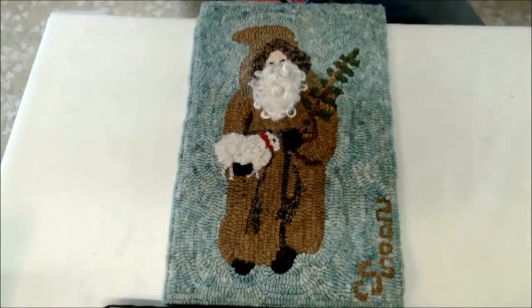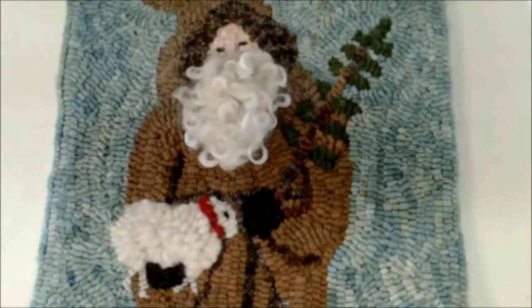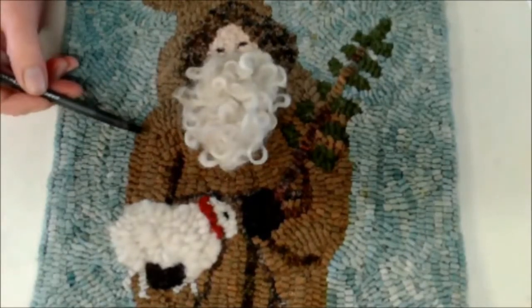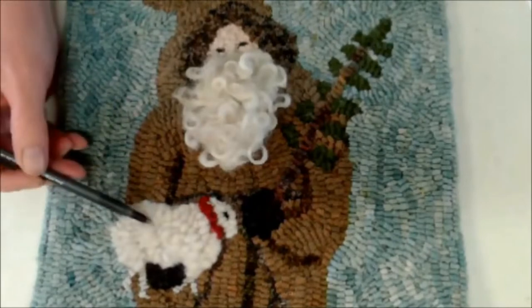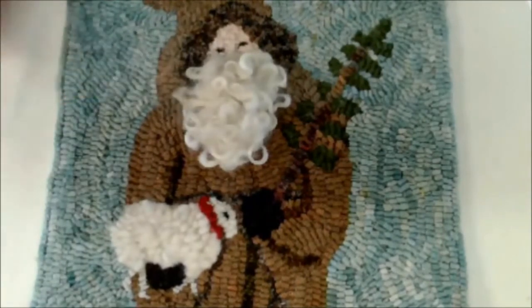First, let's take a look at rug hooking. Hooking is a method used to make rugs and other textiles by using a hook to pull narrow loops of cloth or yarn up through a foundation fabric. Here we have a Father Christmas who has been hooked using wool strips, wool roving, and some wool curls for texture.